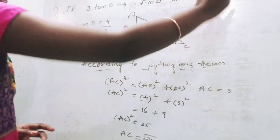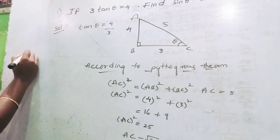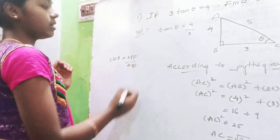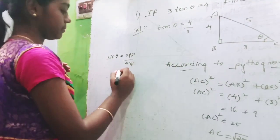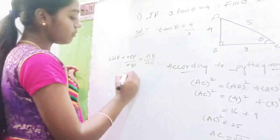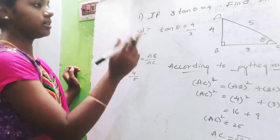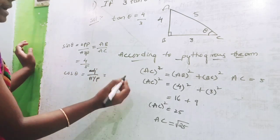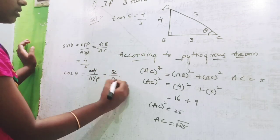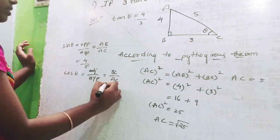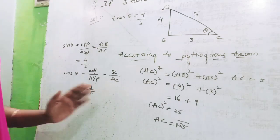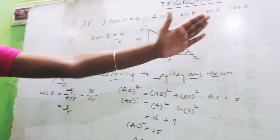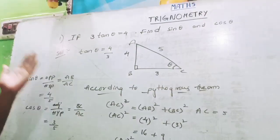Now we know the value of AC is 5. We have to find sin theta and cos theta. Cos theta is adjacent by hypotenuse, that is BC by AC. The value of BC is 3 and AC is 5, so cos theta equals 3 by 5. They gave the tan theta value, and like this we have to find sin theta and cos theta values based on the multiplicative inverse of trigonometric ratios.